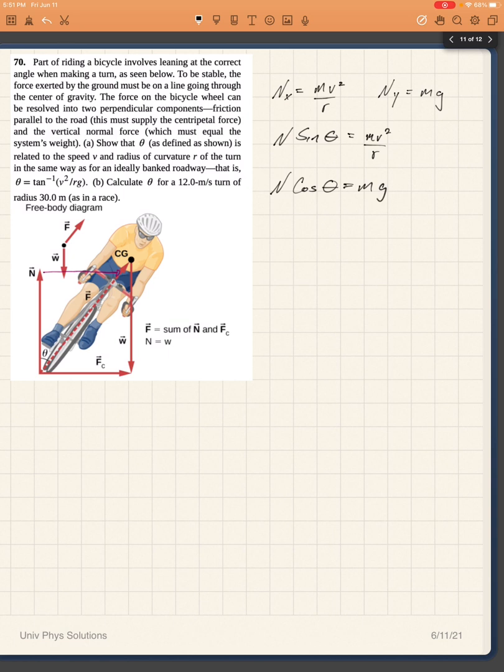So then I have that from equation one, I would have that n is equal to mv squared over r sine of theta. And from equation two, I have that n is equal to mg over cosine of theta.